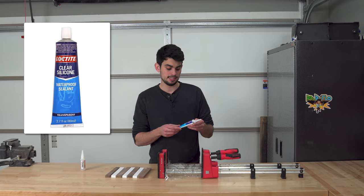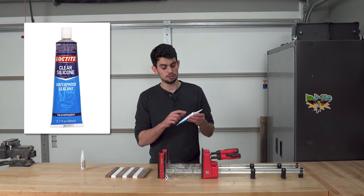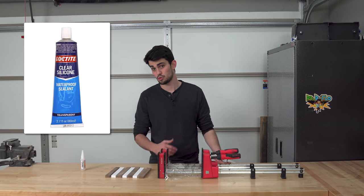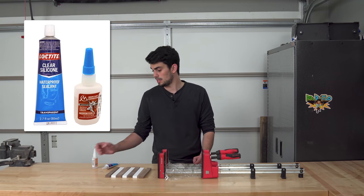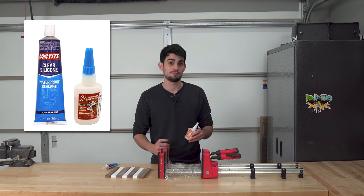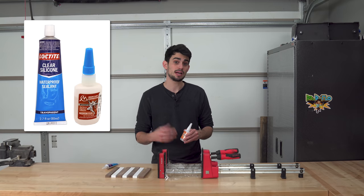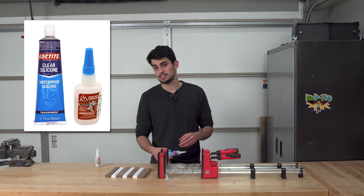Now when working with the silicon Loctite, it says on the side of the tube to let it cure for 2 hours. But in my experience, the bond is not strong enough until about 24 hours, so definitely wait a little bit of extra time. I've also had luck with this medium flex super glue, which sets up much faster, but it's a bit more expensive. The important part is that there's some kind of elastic component to the glue that you use. For this, I'm going to use the silicon adhesive.